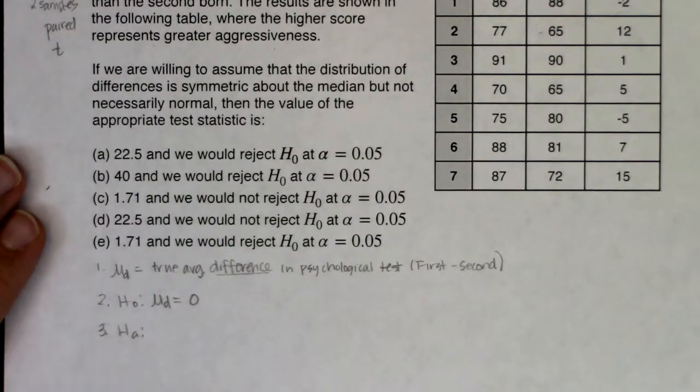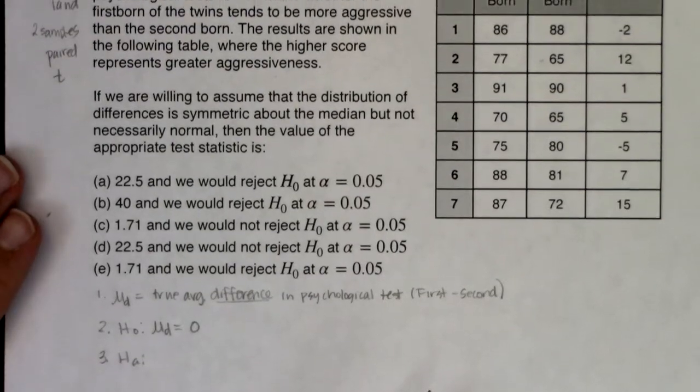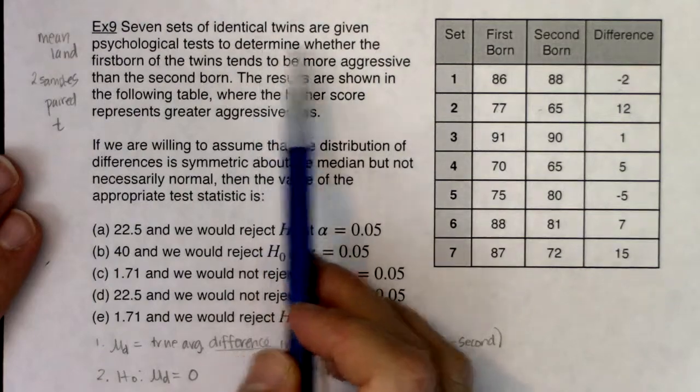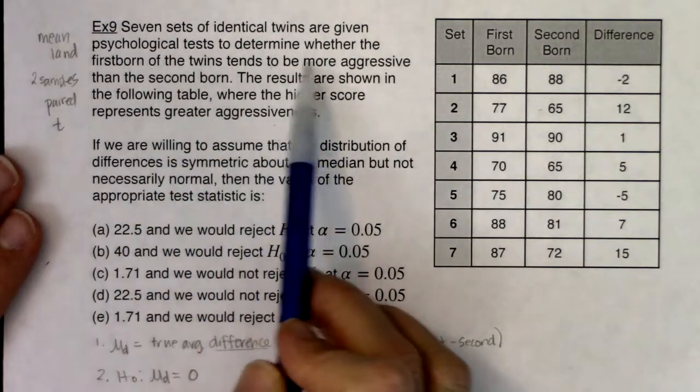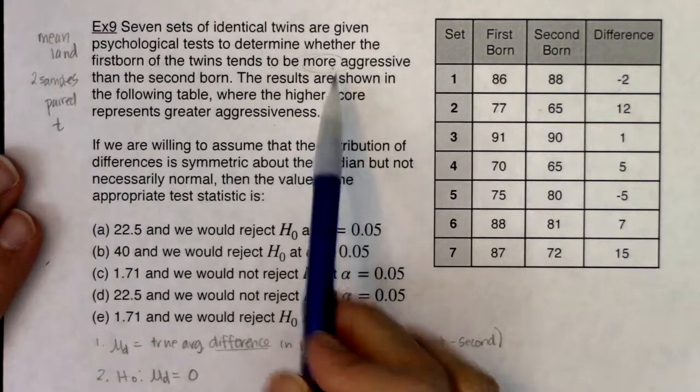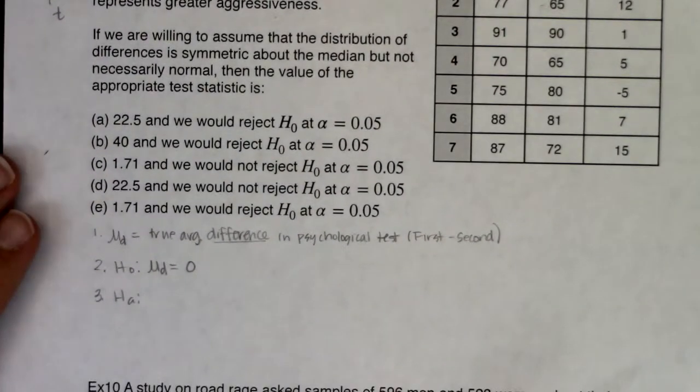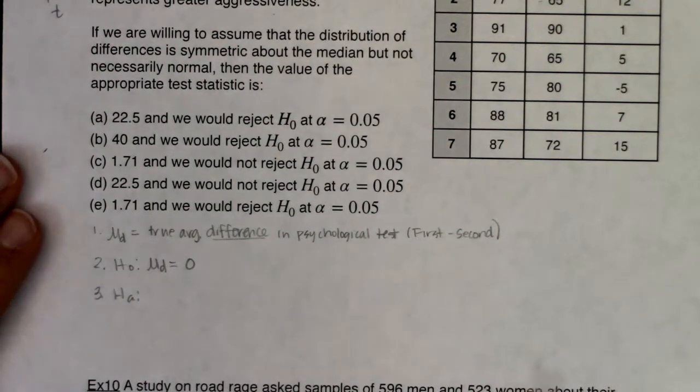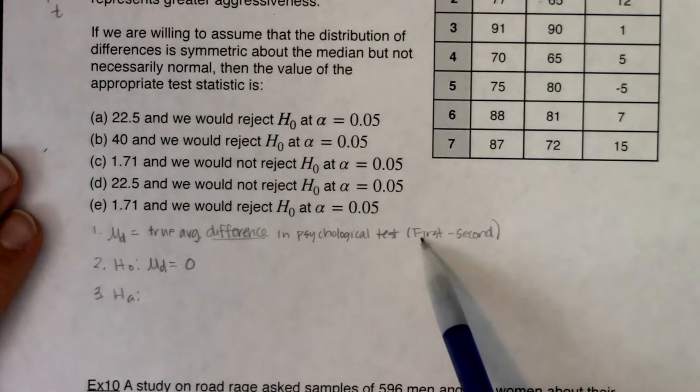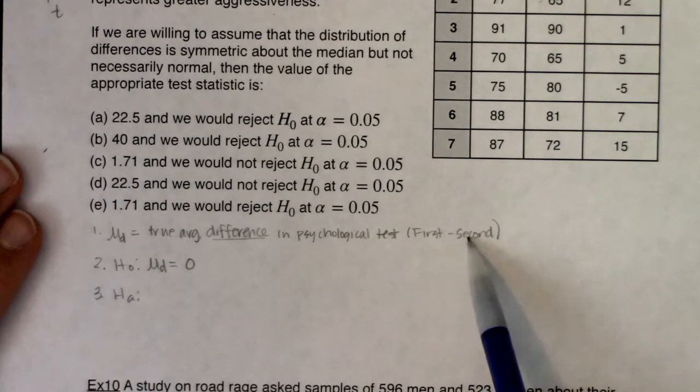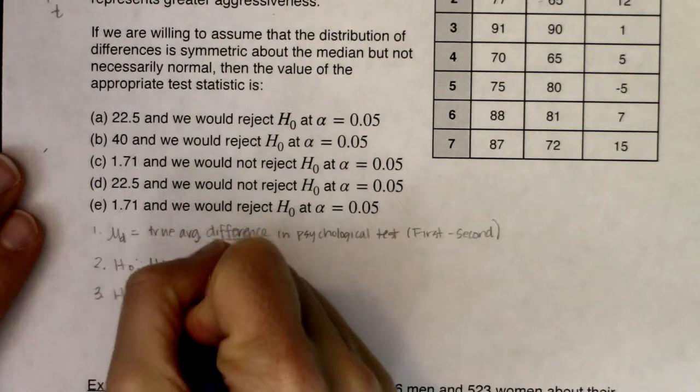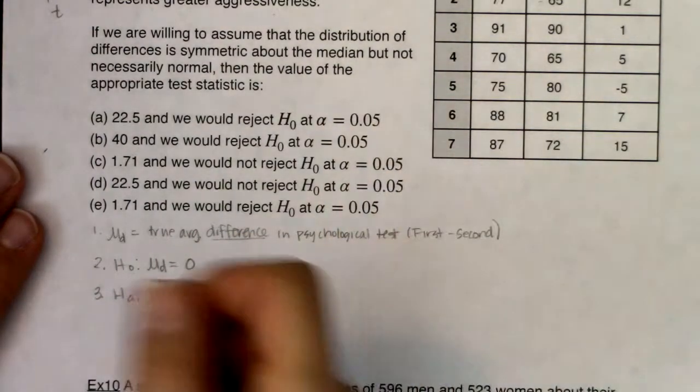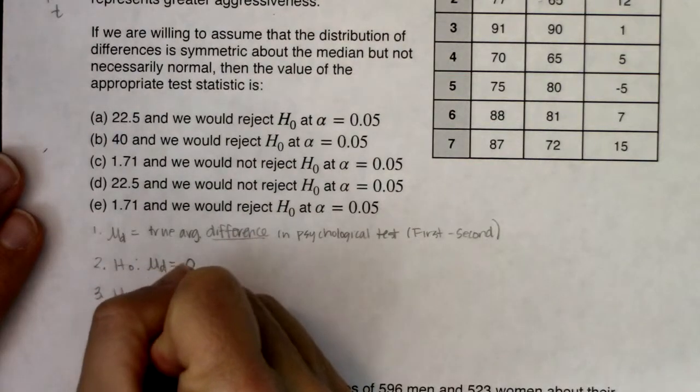Hₐ, did we have a slant here? Let me go back up. It says we want to use this information to determine whether the first born tends to be more aggressive. So that more aggressive is our slant. If the first born of the twins is more aggressive, that means they would have a higher score here. So if this number is larger than this number, if it's higher, then their difference should be positive. Now I've got α being put in my multiple choice part as 0.05.